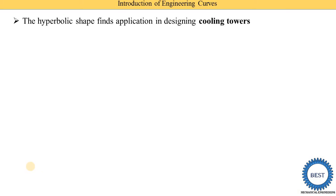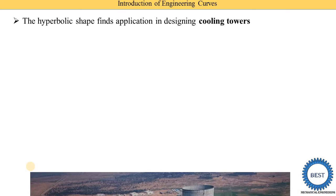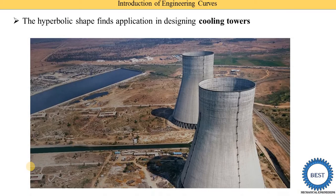For example, the hyperbolic shape finds application in the designing of cooling towers. This is one of the mechanical components used to cool water, meaning it is used to reduce the temperature of the water. This shape is called the hyperbolic shape.